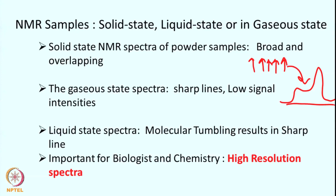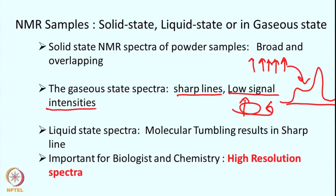For gaseous samples, molecules spin and tumble fast, so because of that fast tumbling they have sharp lines. However, the actual number of spins present in a gaseous sample is very low, so the abundance of spins is less and therefore they have low signal intensity. This is also not a preferred way of doing NMR spectroscopy.